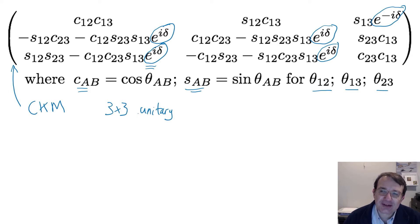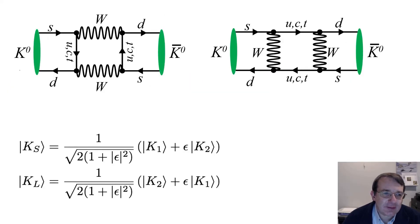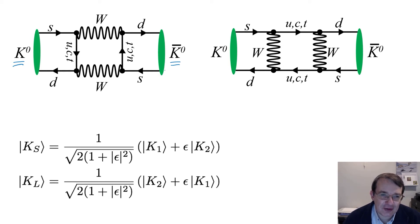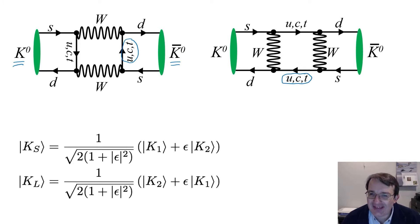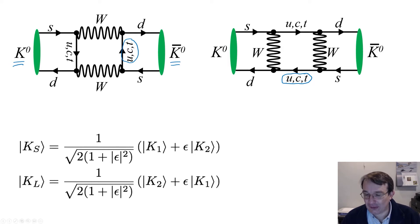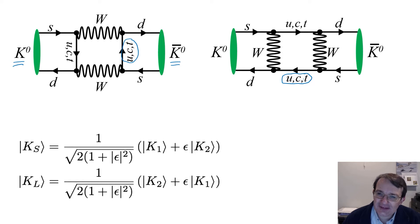Let's look at what's called indirect CP violation. Indirect CP violation is when the CP violation occurs in the mixing between the K0 and the K0-bar. In the standard model, there are two leading-order diagrams that contribute to it — these two box processes. Both diagrams involve all three generations of quark, which is required for the complex phase to get involved. If you only have two generations, the complex phase can be rotated out, but if you have all three, you cannot get rid of it.